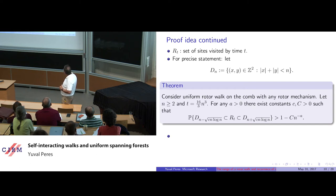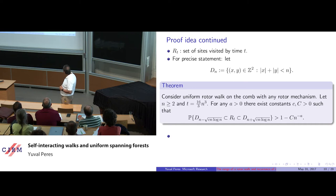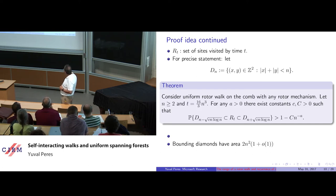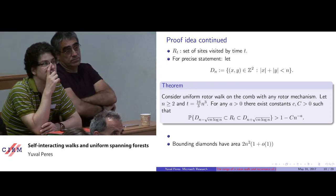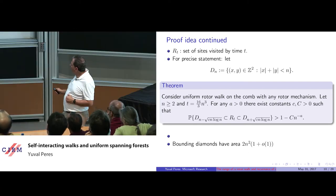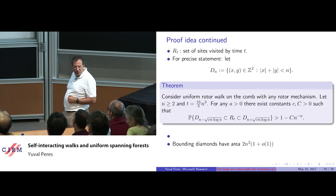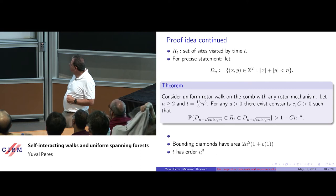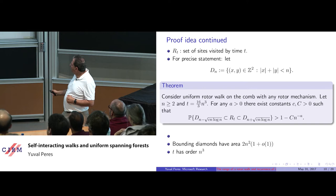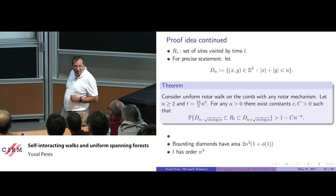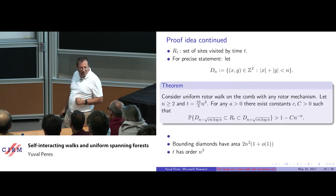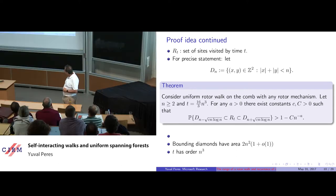After t steps the rotor walk's range is essentially a diamond of size n, where the relation between t and n is t ~ constant · n³. The diamond capturing R_t has volume 2n², so because t has order n³ and the diamond has area 2n², you get the two-thirds relation. It's the same relation conjectured for the plane and proved for the comb, but the shape looks different.